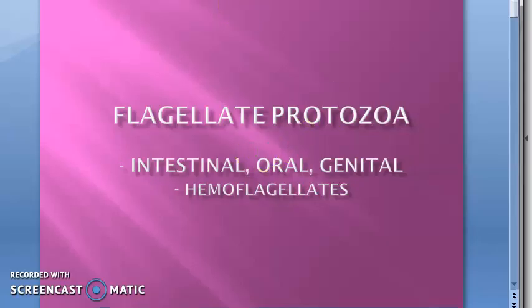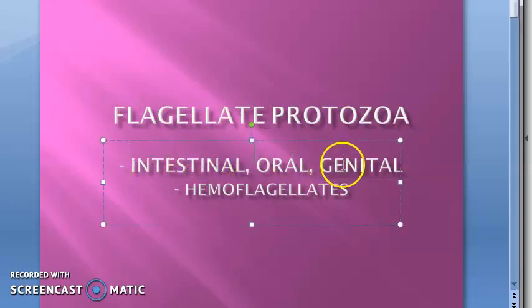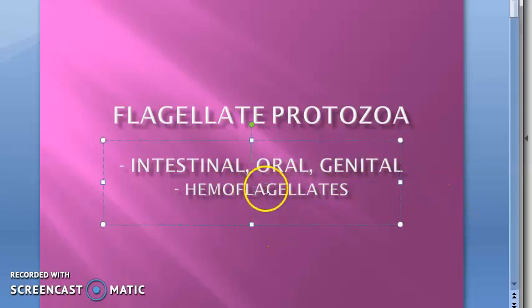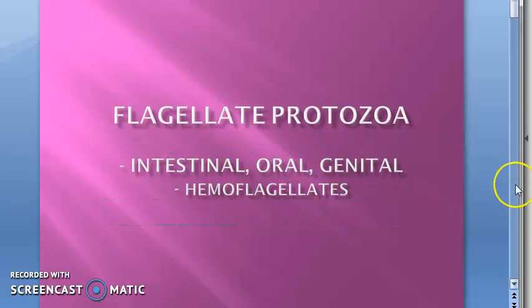In microbiology, let us look at the chapter on flagellate protozoa. Flagellates are divided into flagellates 1 and 2. In flagellates 1, we will look at the intestinal, oral, and genital flagellates. In the next section, we will look at hemoflagellates. So we are discussing only the intestinal, oral, and genital flagellates now.